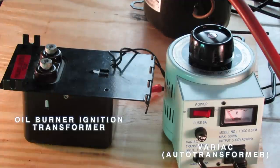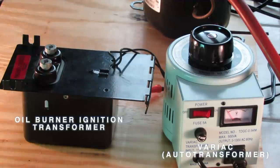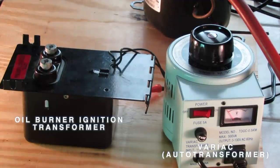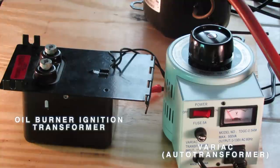Normally, an oil burner ignition transformer takes in 120 volts AC and steps it up to about 10,000 volts AC at 23 milliamps. But when I vary the voltage coming into it, I can either lower or raise the voltage coming out.